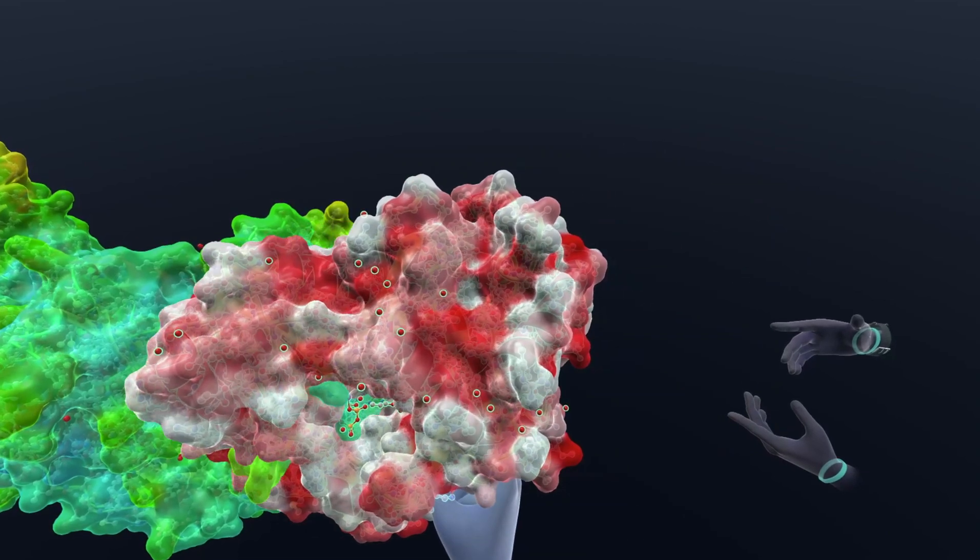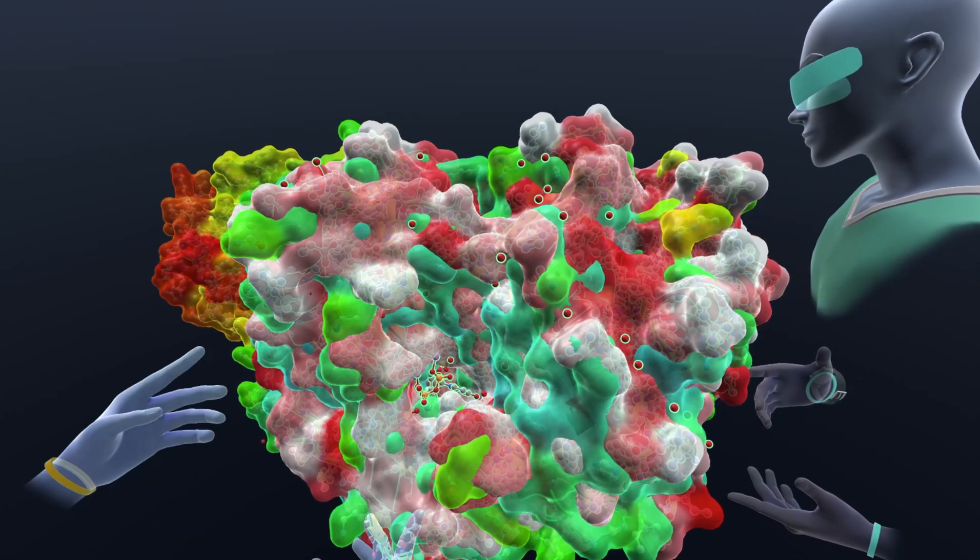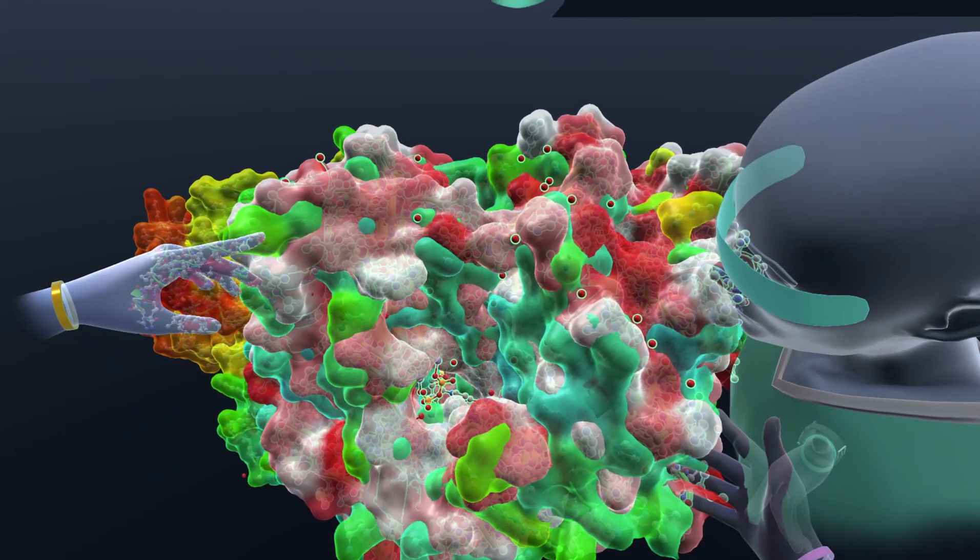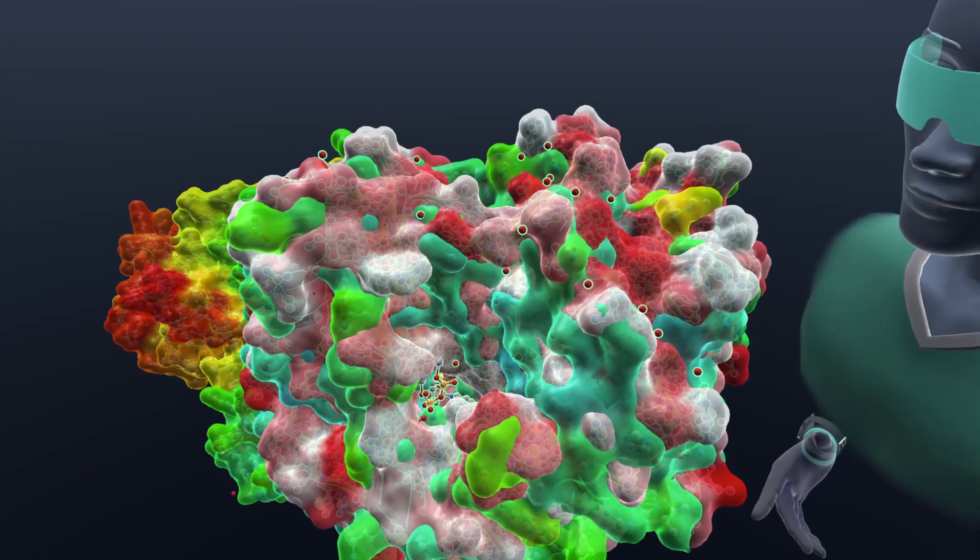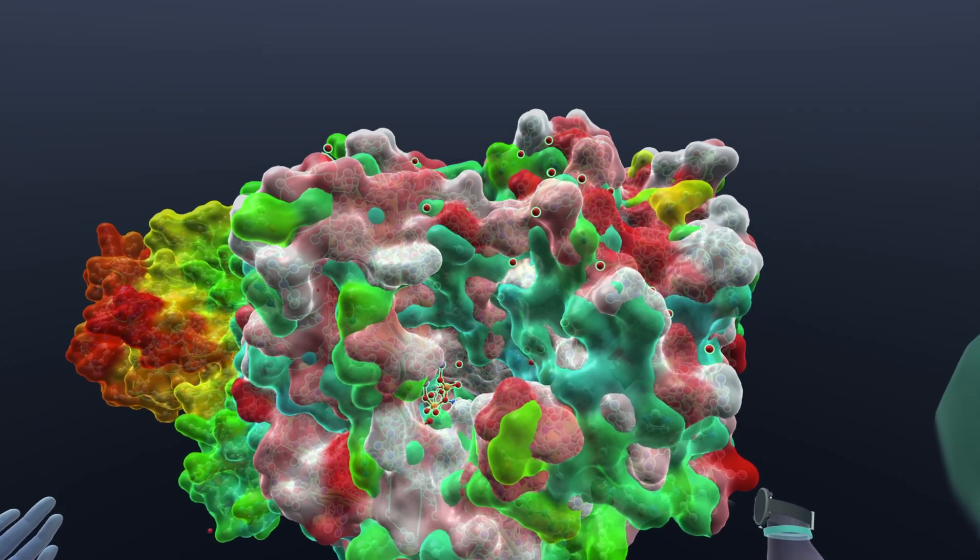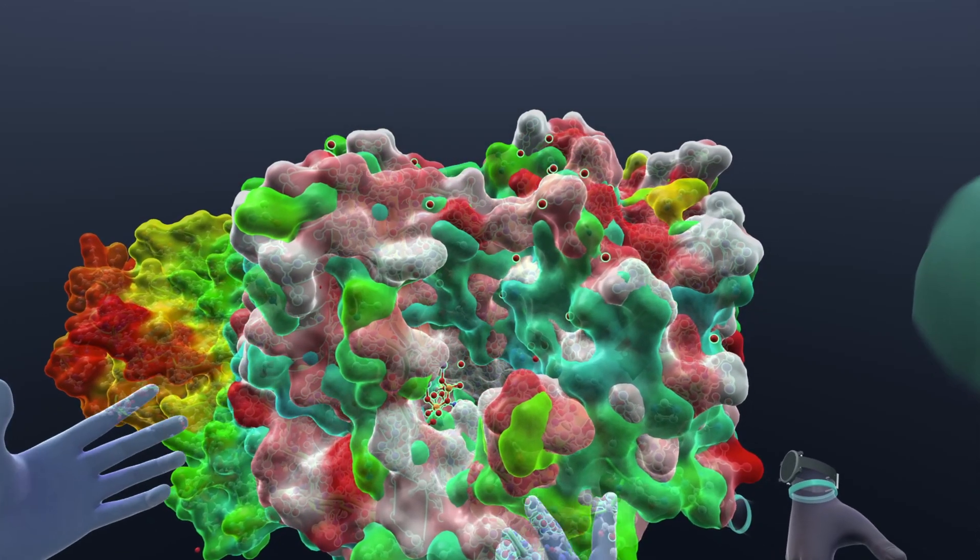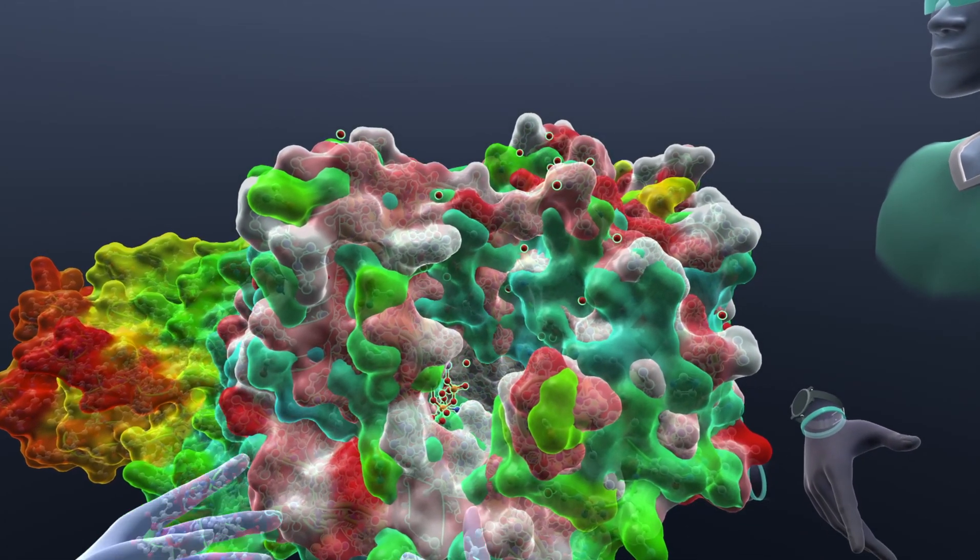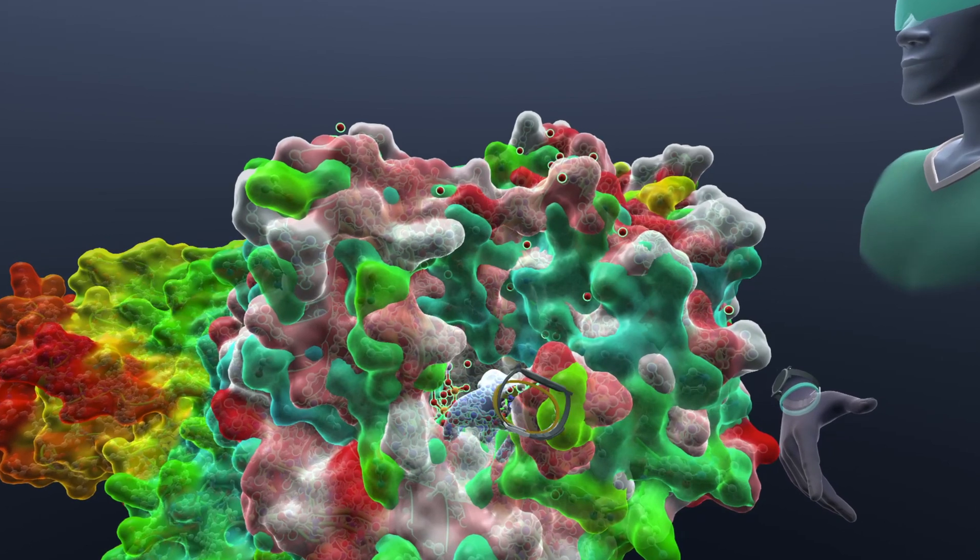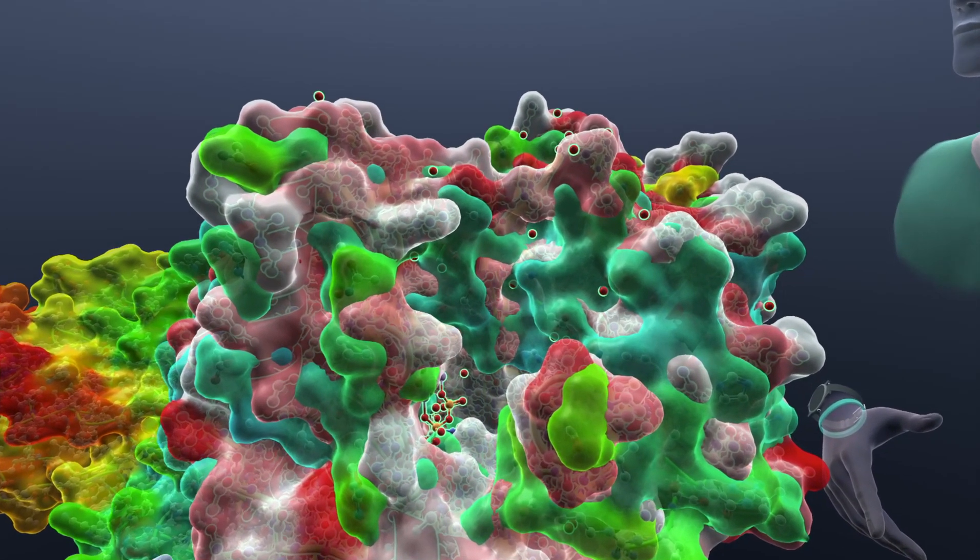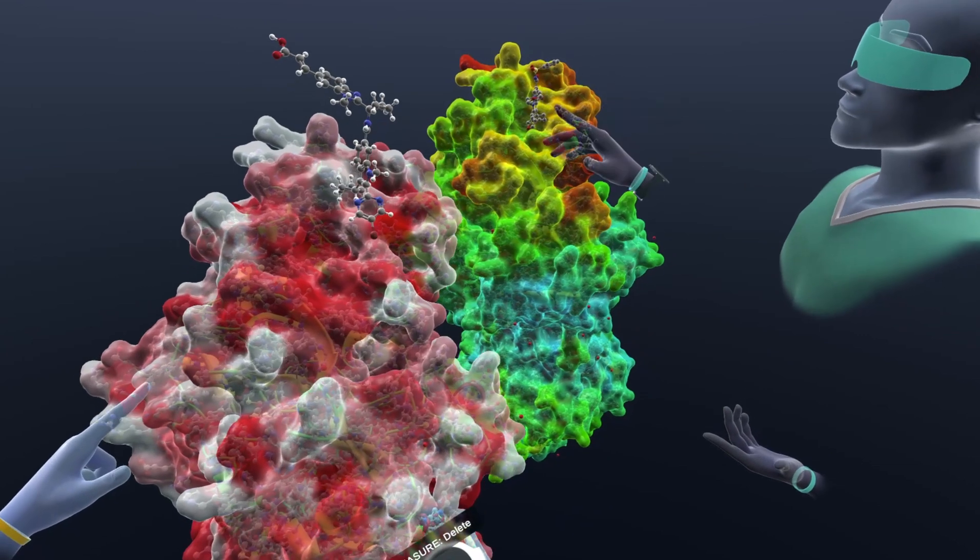We can roughly just put it over there and you can see interestingly that the conformation of 4GTW is significantly different from 4GMC, enough that it really doesn't properly overlap. This says a lot about x-ray crystallography and also the effects of these ligands on the conformation of the protein.